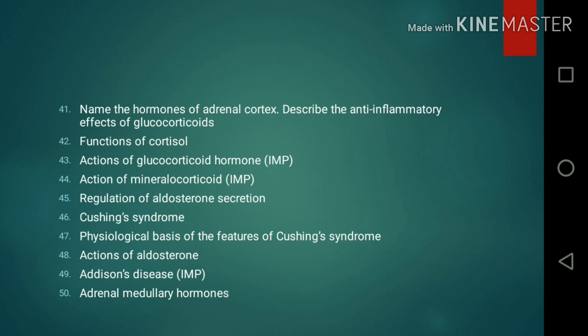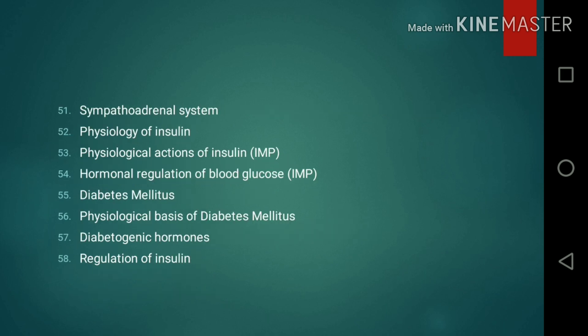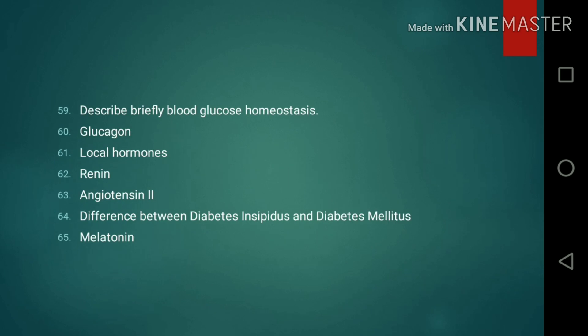Short notes continued: 44. Action of mineralocorticoids. 45. Regulation of aldosterone secretion. 46. Cushing's syndrome. 47. Physiological basis of the features of Cushing's syndrome. 48. Actions of aldosterone. 49. Addison's disease. 50. Adrenal medullary hormones. 51. Sympathoadrenal system. 52. Physiology of insulin. 53. Physiological actions of insulin. 54. Hormonal regulation of blood glucose. 55. Diabetes mellitus. 56. Physiological basis of diabetes mellitus. 57. Diabetogenic hormones. 58. Regulation of insulin.